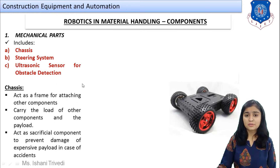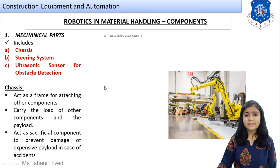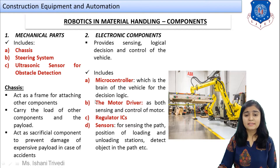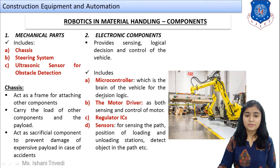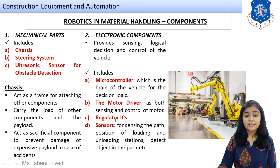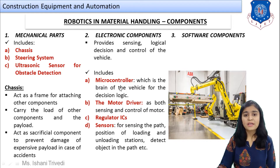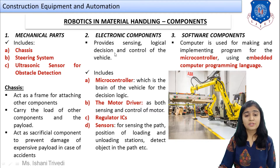The electronic components include the microcontroller — which is the brain of the vehicle for decision logic — the motor driver, sensors, and regulator ICs. The sensors sense the path and the position of loading and unloading stations, allowing the robot to navigate and operate accurately.